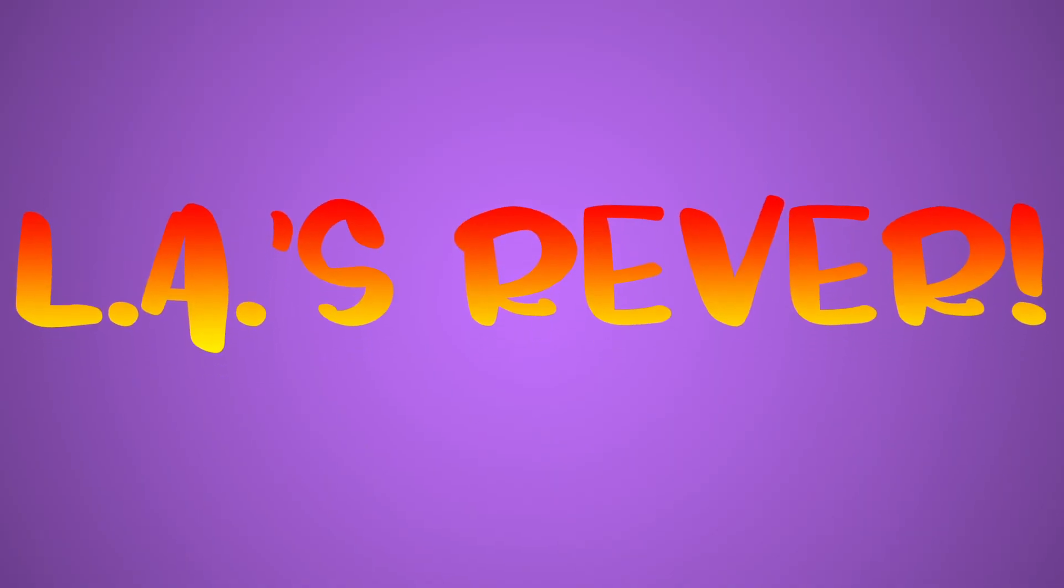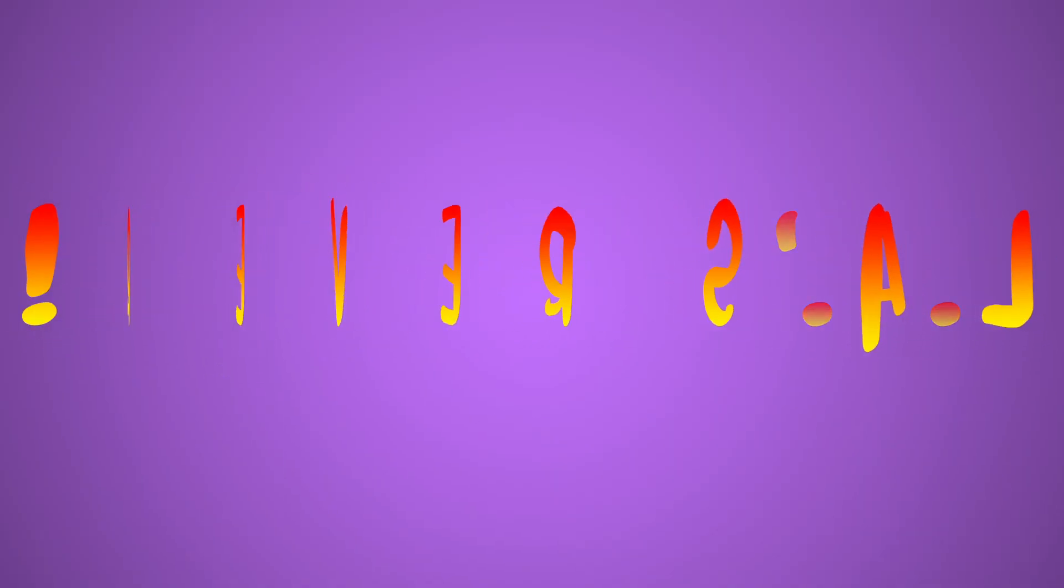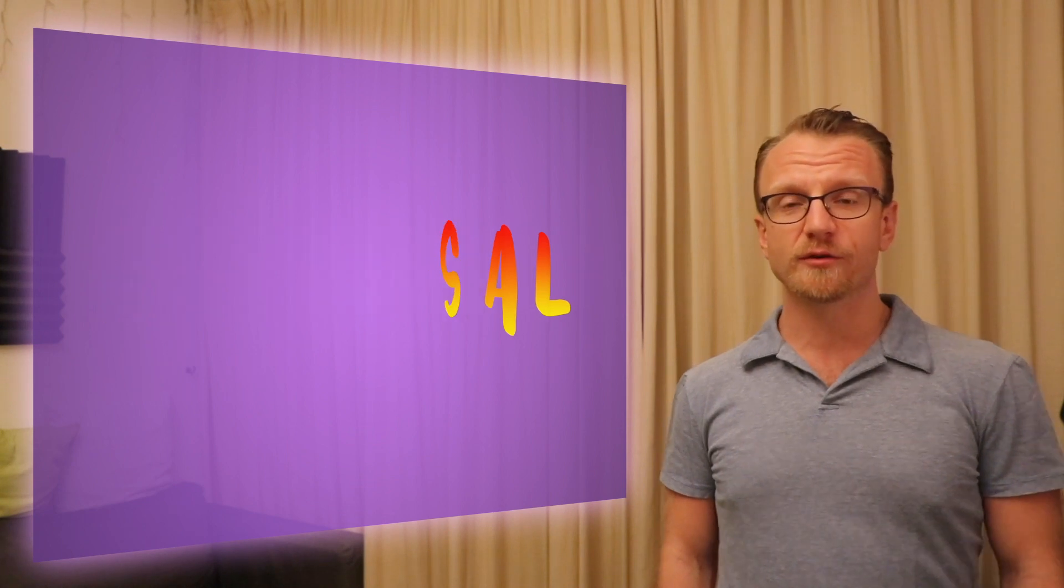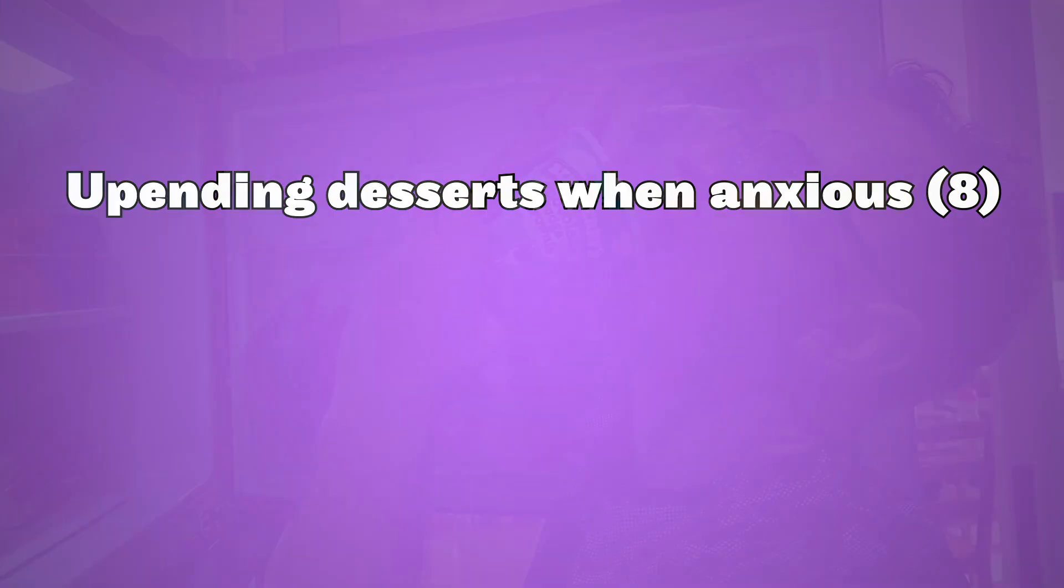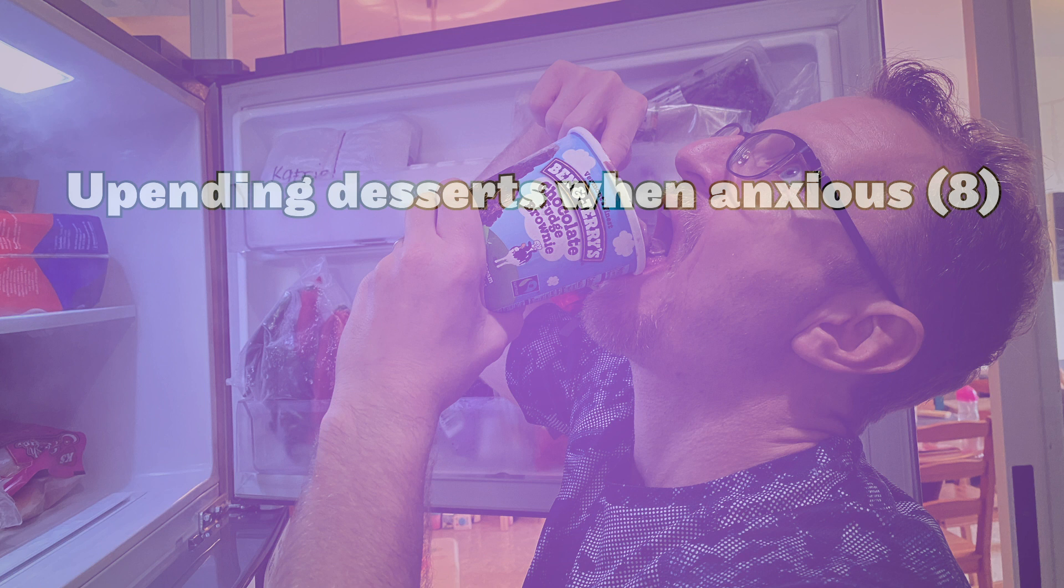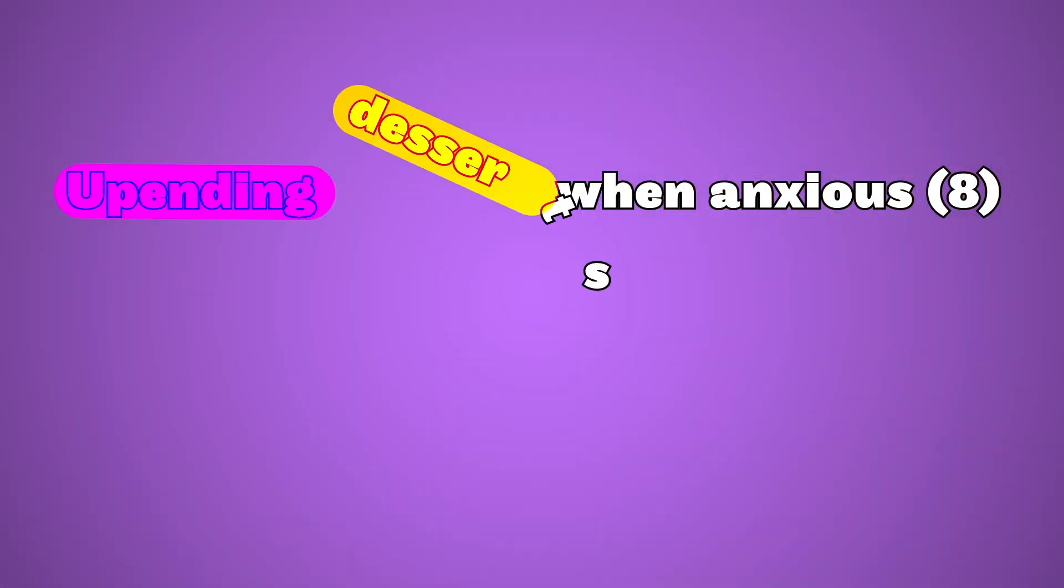So the next clue type we're going to look at are reversals, which are exactly what they sound like. And if the name doesn't make it obvious already, try this example. Upending desserts when anxious. So if you upend the word desserts, you get the word stressed, which is a word for anxious.